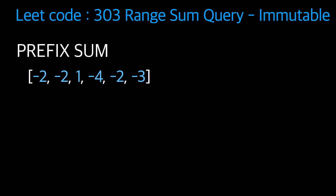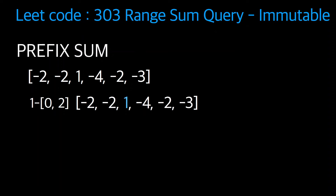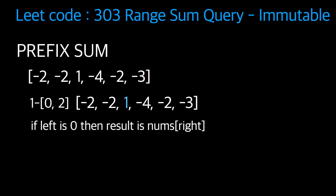Now we have the prefix sum array by traversing the entire array only once. Can we answer queries in constant time using this prefix sum? Yes! Take the first query zero comma two - zero is the left, two is the right. You can see the highlighted number at index two in the prefix array is one, which is the answer for query zero to two. If the left value is zero, the result is simply nums[right], because up to index two we've added all numbers.